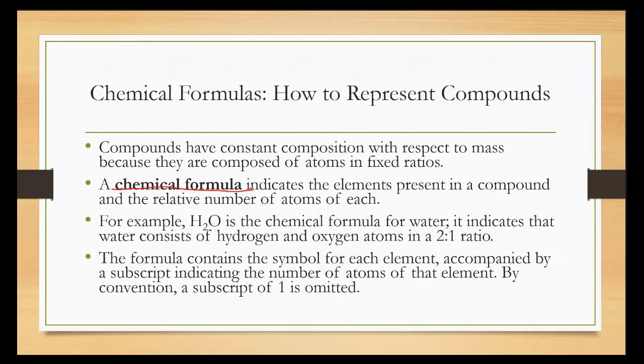For example, H2O is the chemical formula for water. It indicates that we have hydrogen and oxygen atoms, and it also states that we have a 2 to 1 ratio. The formula contains the symbol for each element accompanied by a subscript indicating the number of atoms of that element. By convention, the subscript of 1 for oxygen is omitted.